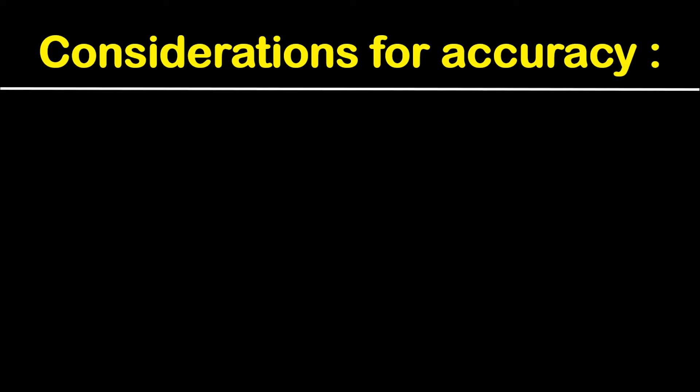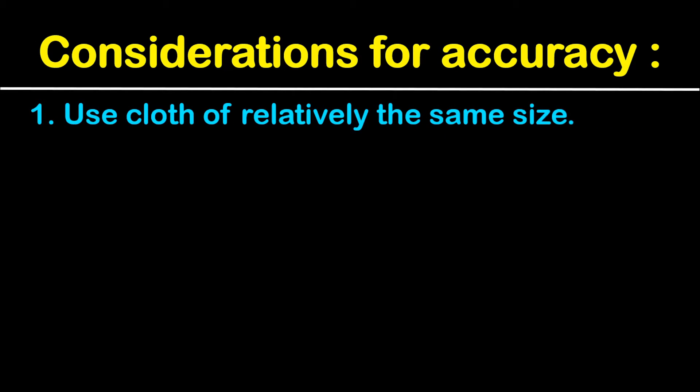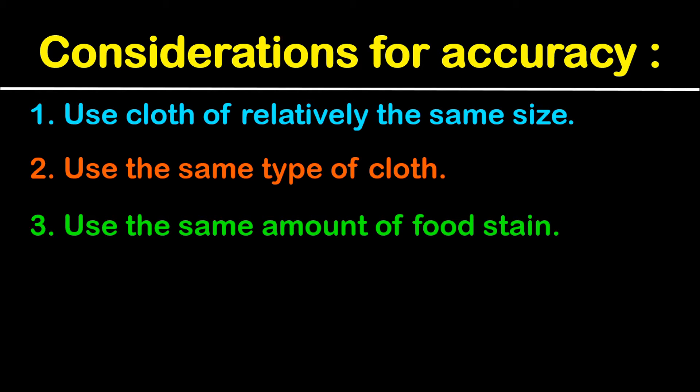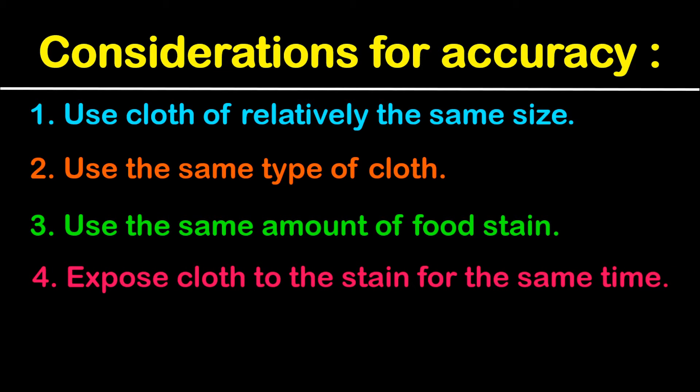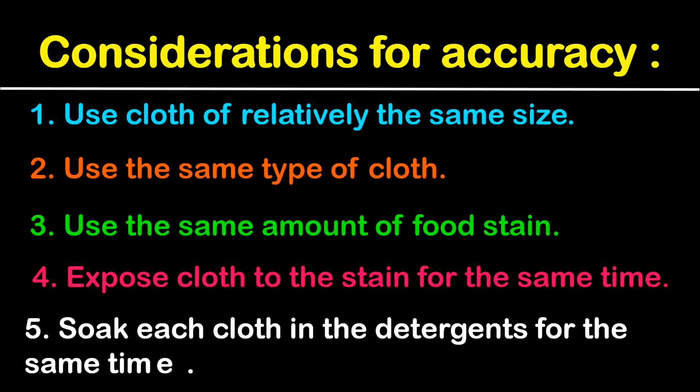Considerations for accuracy: One, it's important to use cloth of relatively the same size. It's also important to use the same type of cloth. Also use the same amount of food stain on each piece of cloth. Also expose the cloth to the stain for the same time. It's also important to soak each cloth in the detergents for the same time.